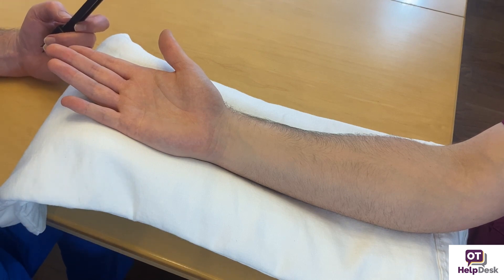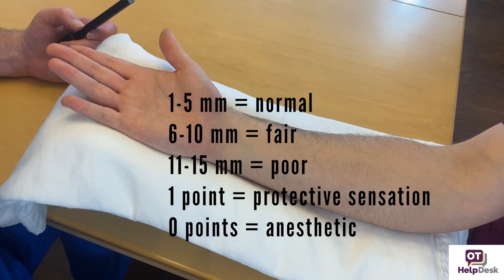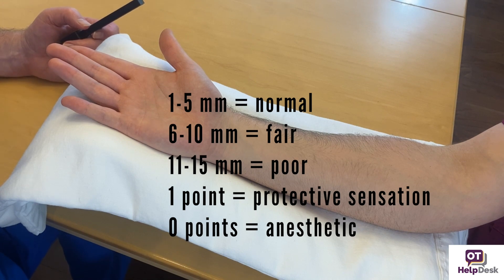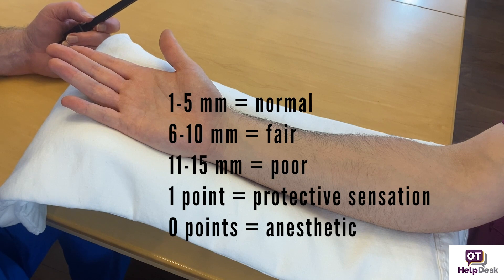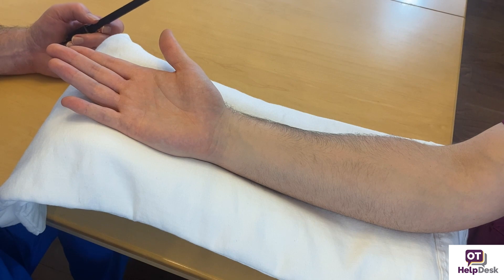The norms, as you can see on screen: one to five millimeters is normal static two-point discrimination — which is why we start at five. Six to ten millimeters is fair. Eleven to fifteen millimeters is poor static two-point discrimination. One point perceived alone is considered protective sensation only. If the patient feels nothing at all, that area is considered anesthetic — a lack of feeling. I see this often working in hand and upper extremity.